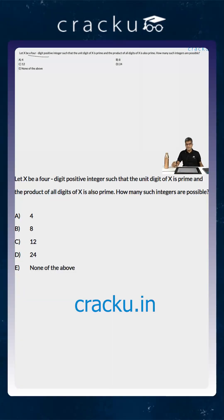Let x be a four-digit positive integer. The unit digit of x is prime and the product of all the digits of x is also prime. How many such integers are possible? That is basically the question.